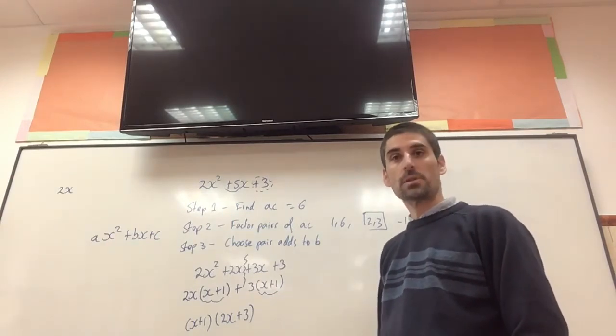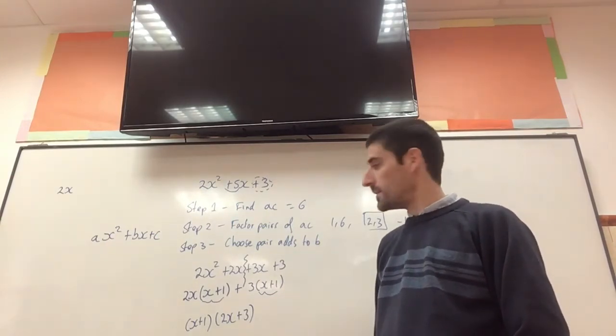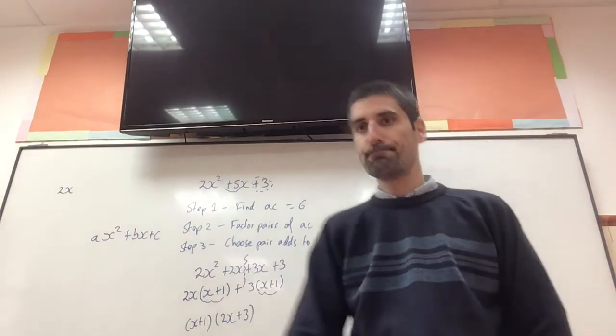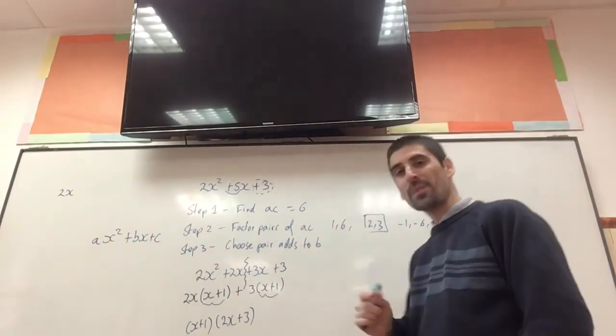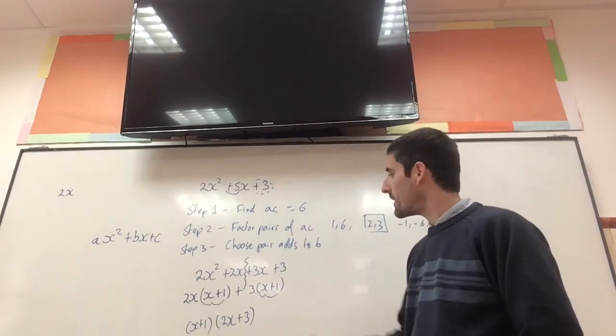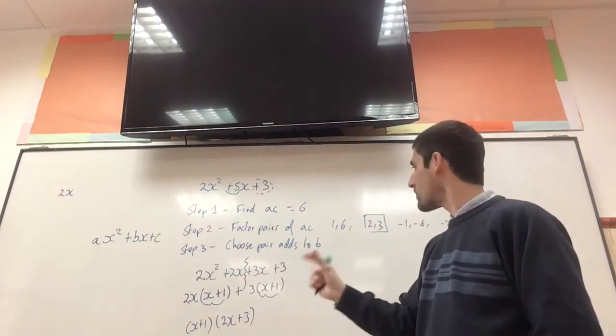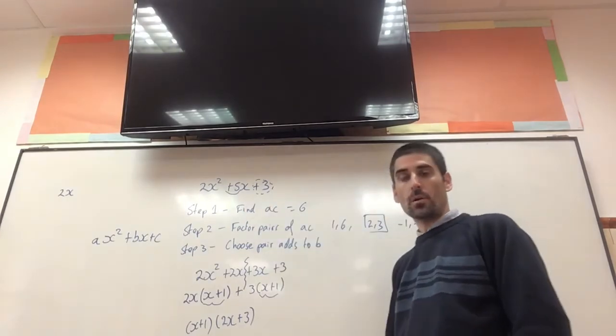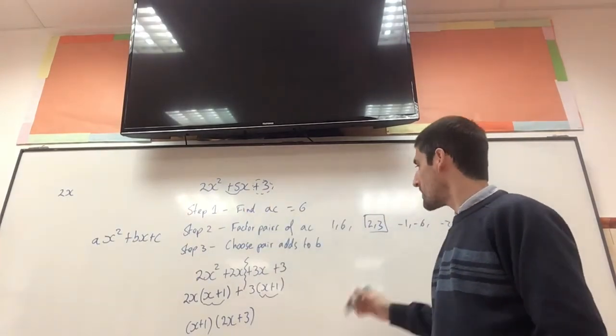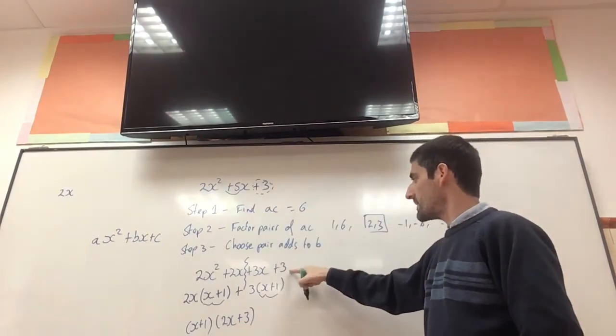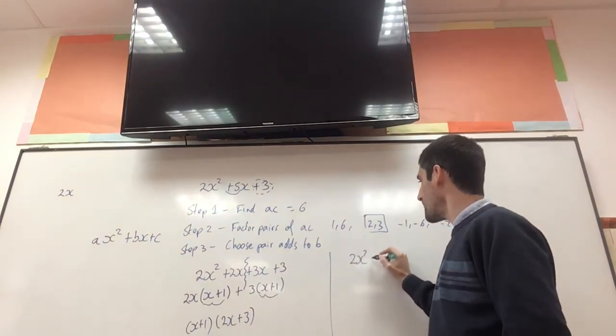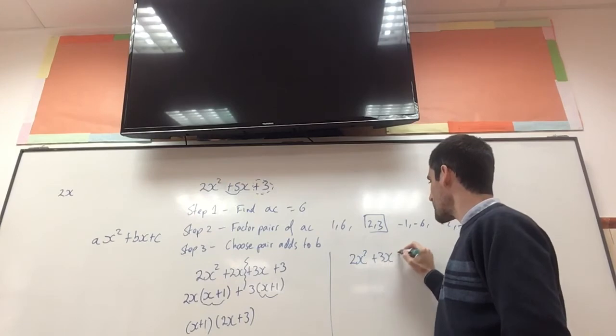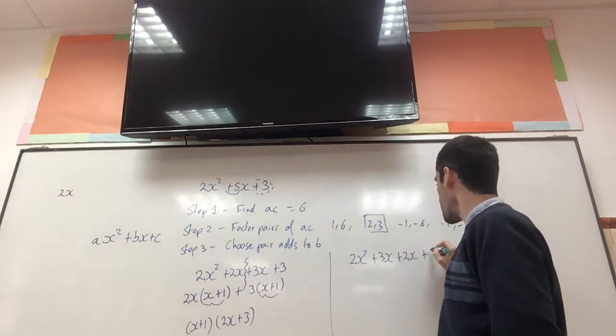I suggest you take notes and do this a number of times. Now, one thing to note is that really, it doesn't matter the order in which you write the components of the middle term. So here, instead of writing it like this, I could have written 2x squared plus 3x plus 2x plus 3.